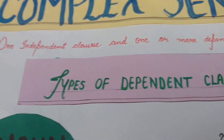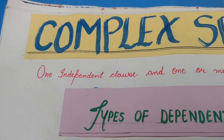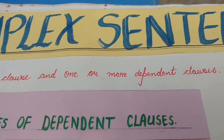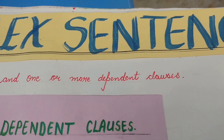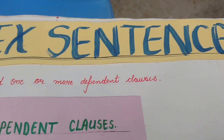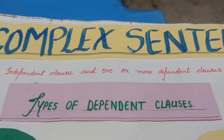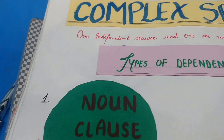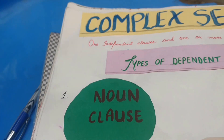Let us talk about another example: 'I am surprised that you should believe such nonsense.' In this, 'I am surprised' is the main clause, and 'that you should believe such nonsense' is the dependent clause, depending on the main clause, 'I am surprised.'